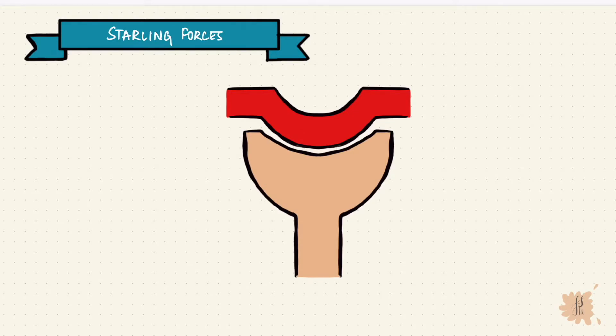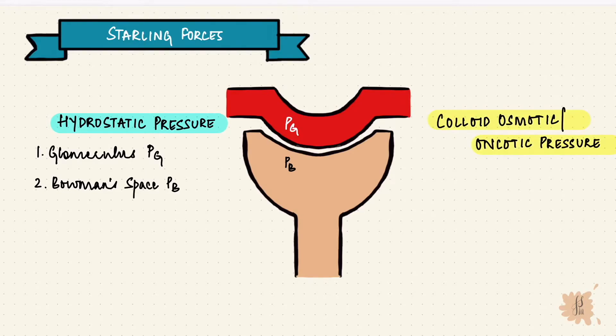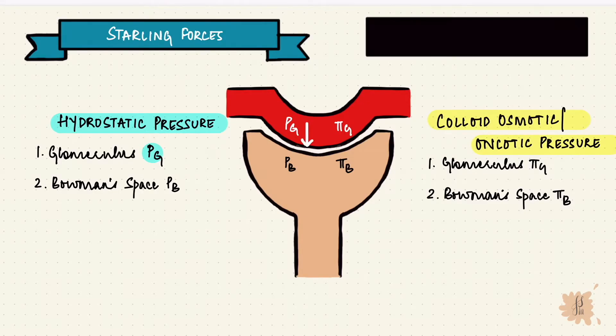There are four Starling forces. The hydrostatic pressure on either side - in the glomerulus is PG, and in the Bowman space is PB. The colloid osmotic or oncotic pressure in the glomerulus is pi G, and in the Bowman space is pi B. PG is hydrostatic and comes from fluid pressure, so it encourages filtration - we'll put a positive sign next to that. PB from the other side opposes filtration, so we'll put a negative sign there.